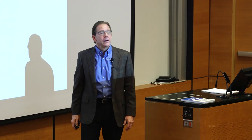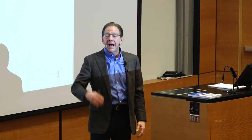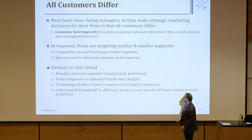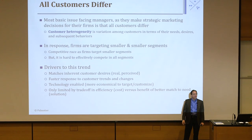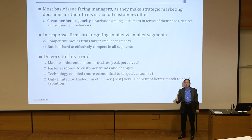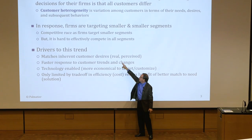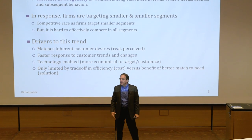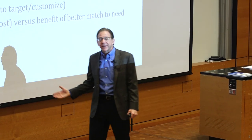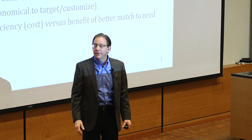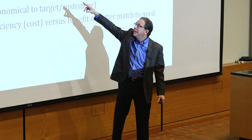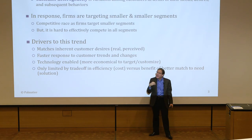Firms are targeting smaller and smaller segments because it's very hard to compete in all segments equally — you can't be the high-end supplier and the low-end supplier, the high-performance and the simple product. The drivers of this trend are, first, that customer needs do vary. Look at a grocery store — walk down the ketchup aisle and see how many different types there are, from sweeter to spicier.